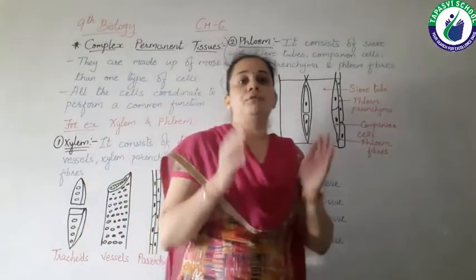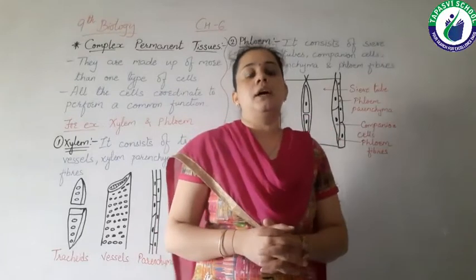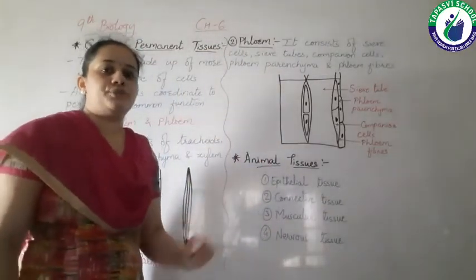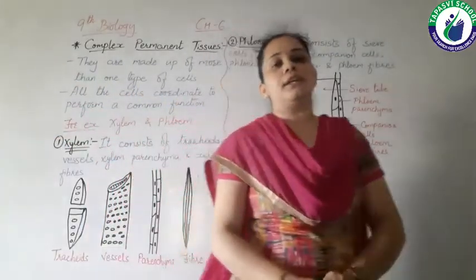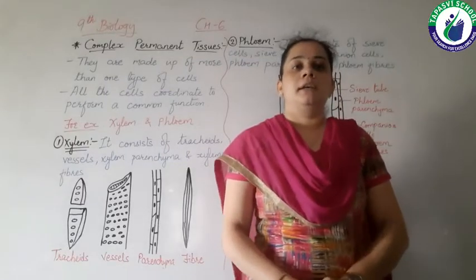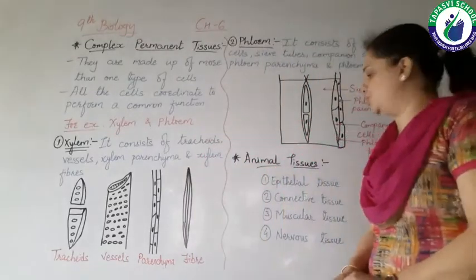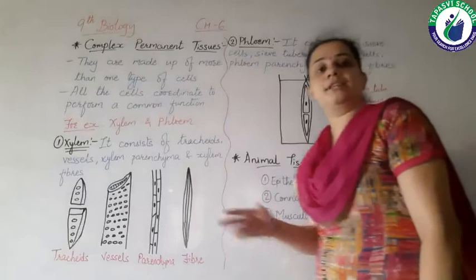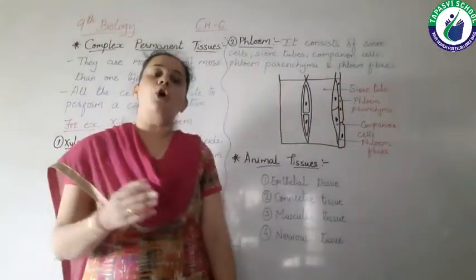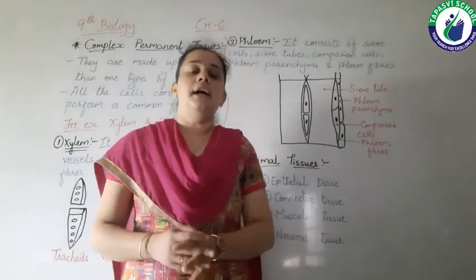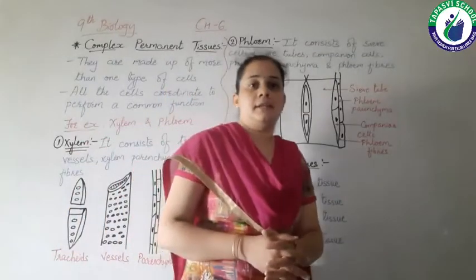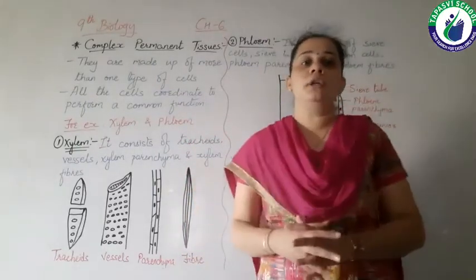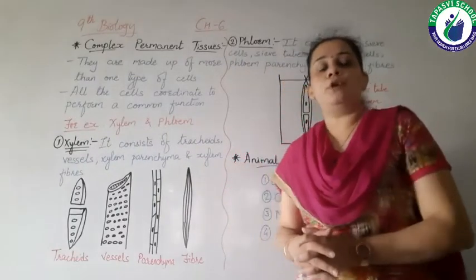Here we are completing the plant tissues portion of our chapter. Now let's move towards our next topic, that is animal tissues. In this chapter we have to study about different animal tissues present in animals. These tissues are epithelial tissue, connective tissue, muscular tissue and nervous tissue. In multicellular organisms, all the different functions are done by different tissues or cells, and each tissue has its own function, shape and size.